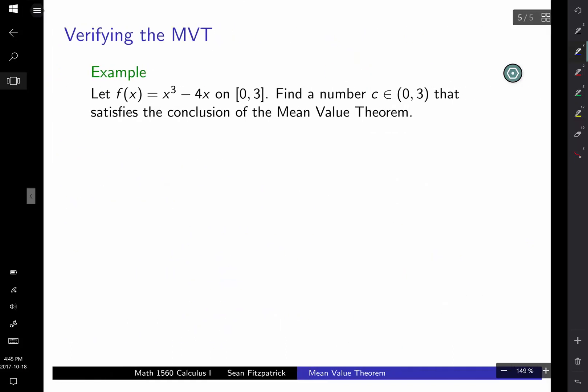Just finish off with one quick one. Let's kind of verify that the mean value theorem works in a concrete example. Let's actually find this number c. So it's a polynomial, so we know our function is continuous and differentiable. What's f'(x)? Well, we get 3x^2 minus 4.